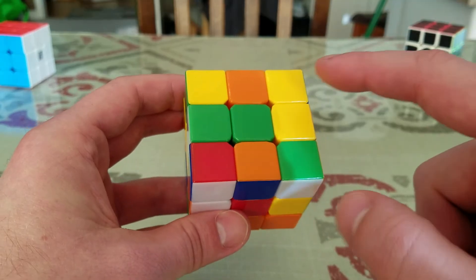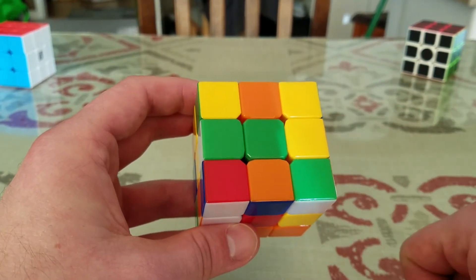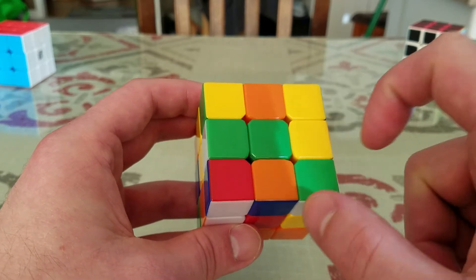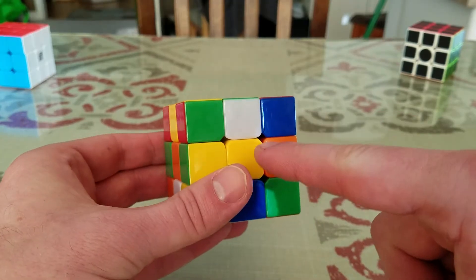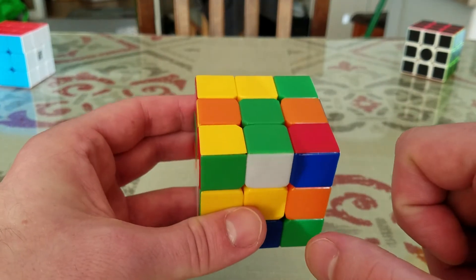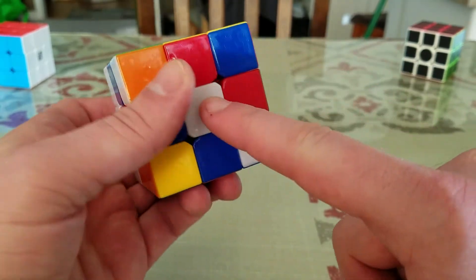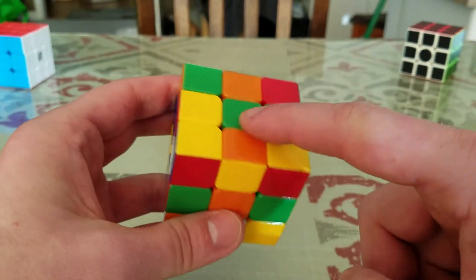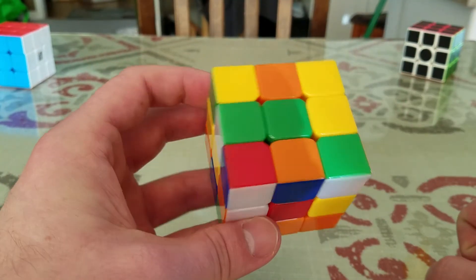Now in this particular case, you'll notice that we started with a green square already in place. However, this particular square is green and white, and this does not match the side. What we need to do is create a green cross where all the sides match. Now because this one's already sort of in the right place, it's really easy to match up.